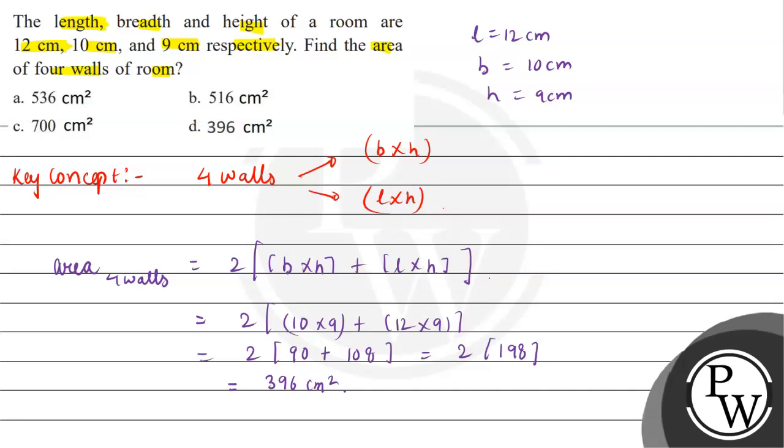So we find the area of 4 walls of room, that is 396 cm².